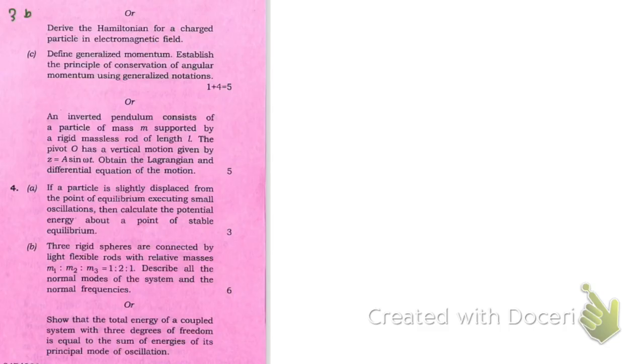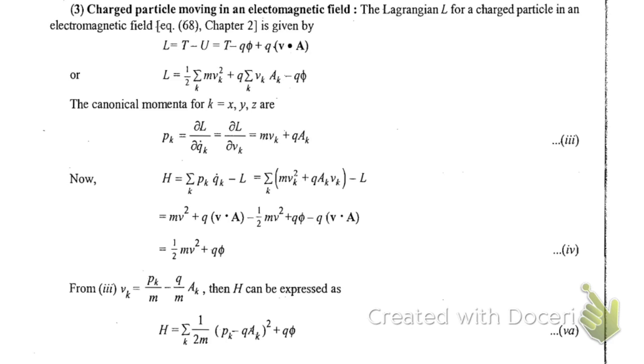Now let's start. Here you see this is question number 3b - there were two questions in 3b so the first one is done in the first part. Here, derive the Hamiltonian for a charged particle in an electromagnetic field. So here is the answer: you can see here a charged particle moving in an electromagnetic field and its Lagrangian is given by T minus q phi and q v dot a. When you see bold letters, use vectors here when you write on copy.